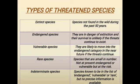Types of threatened species — there are totally 5 types. One: extinct species — species not found in the wild during the last 50 years; example: Sumatran rhino. Two: endangered species — in danger of extinction, survival unlikely if the threat continues; examples: Bengal tiger, red panda. Three: vulnerable species — likely to move into the endangered category in the near future if the threat continues; examples: Nilgiri langur, olive ridley turtle, sloth bear.